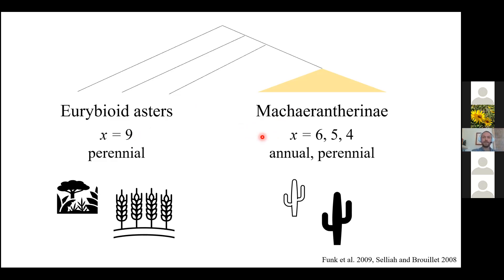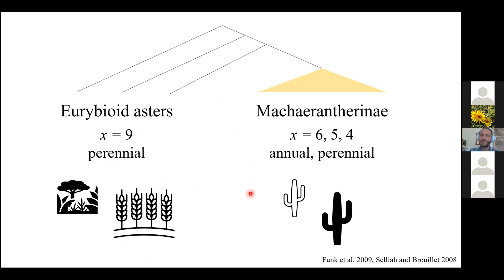There are also qualitative differences: the eurybioids are more perennial and more concentrated in mesic habitats, whereas the Macarantherinae have a high number of annual species and are more concentrated in xeric habitats such as the deserts here in Arizona.